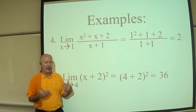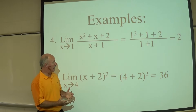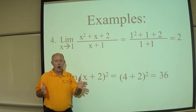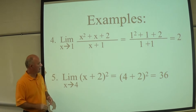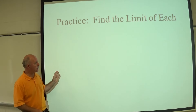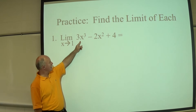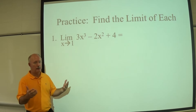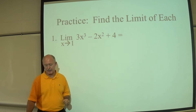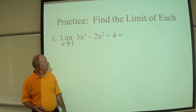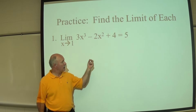Now I want you to try these next examples first. Make sure your calculator is on and ready. After each example comes up, pause the video, work it out using direct substitution, then unpause to check your answer. Here's the first one: the limit as X approaches 1 of 3X cubed minus 2X squared plus 4. Substituting 1 in for X gives 5.